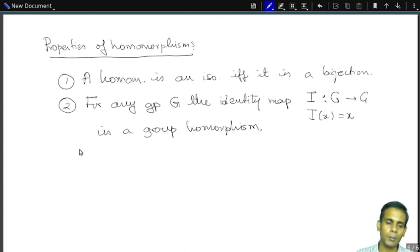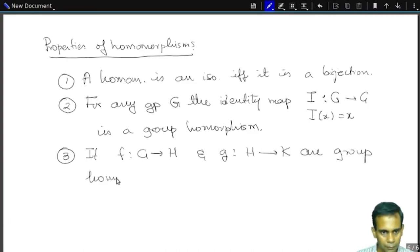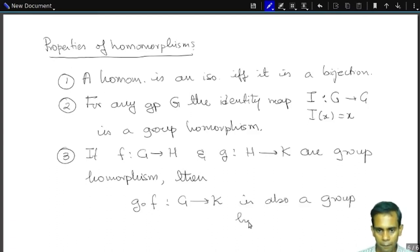And if F is a group homomorphism from G to H and G from H to K is another group homomorphism, if F is a group homomorphism, then G circle F from G to K is also a group homomorphism. Okay, I am sure you can check all of these properties quite easily by yourself. So I am not going to go into the proofs. Instead I will give you some exercises on the homework which will help you solidify your understanding of group homomorphisms.